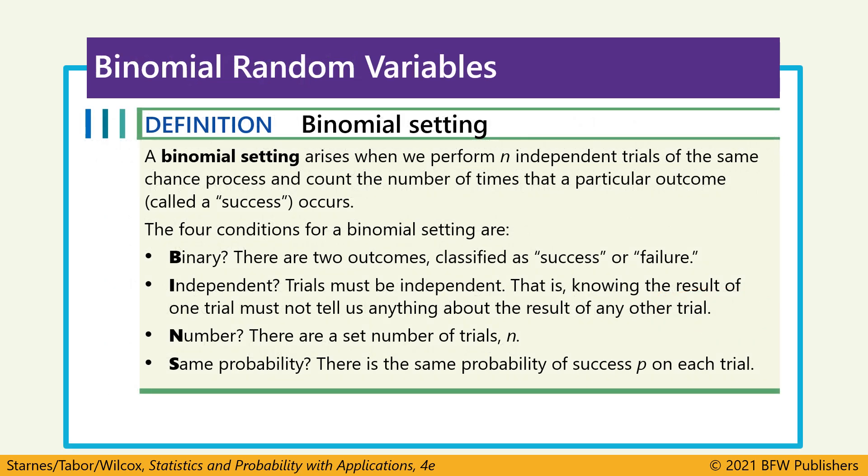To make those four criteria easier to remember, we'll use the acronym BINS. If a situation meets all four requirements, it's a binomial setting. B stands for binary — two outcomes: successes and failures. I is independent — knowing one trial's outcome doesn't affect the probability of the next. N stands for number — a fixed number of trials, in this case 10 multiple choice questions. And S is for same probability — the probability of success doesn't change across trials.